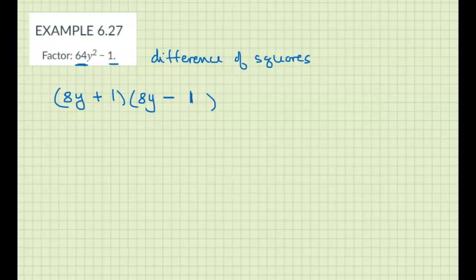And then you can see that when we multiply, this gives me positive 8y, this gives me negative 8y, so the middle term canceled out. That's why you don't have that middle term in that polynomial.